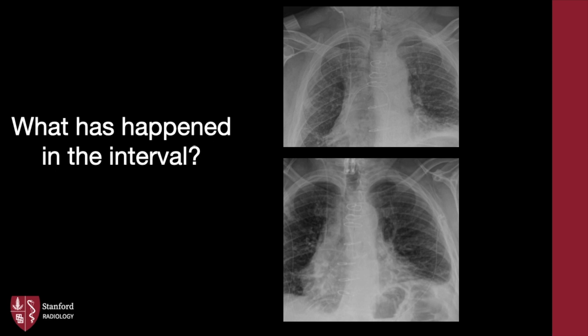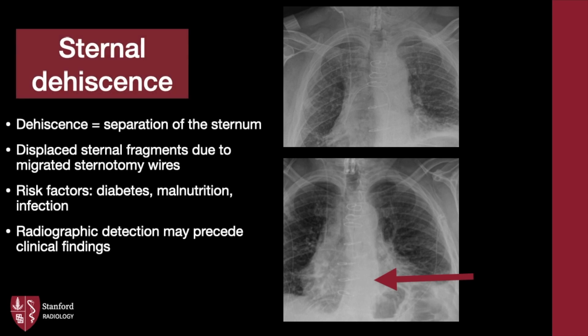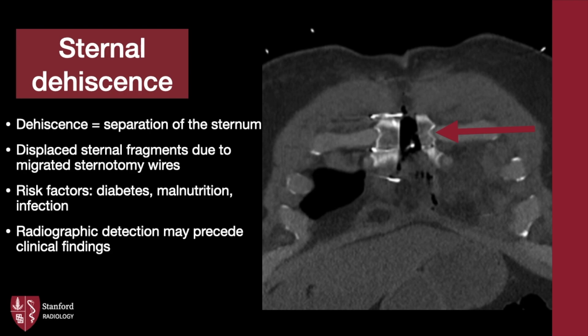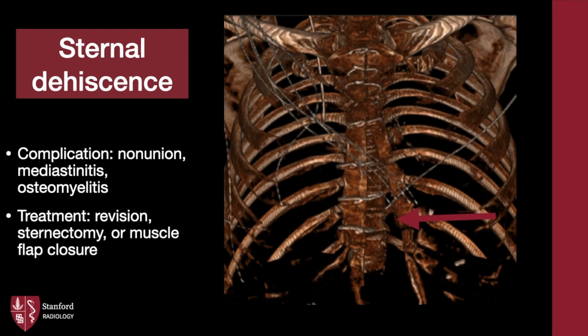In our next case, what has happened in the interval? On our first radiograph, the sternal wires are nicely aligned and intact. A second one shows malalignment of the lower sternal wires. This is sternal dehiscence, defined as separation of the sternum. It is commonly seen in the early postoperative period with risk factors being diabetes, malnutrition, and infection. Migrated sternal wires may lead to displaced, rotated, or disrupted sternal fragments. Radiographic detection may precede clinical findings, which is why identification is very important. The big concern is for associated infection in the mediastinum. Treatment requires revision, sternectomy, or muscle flap closure.